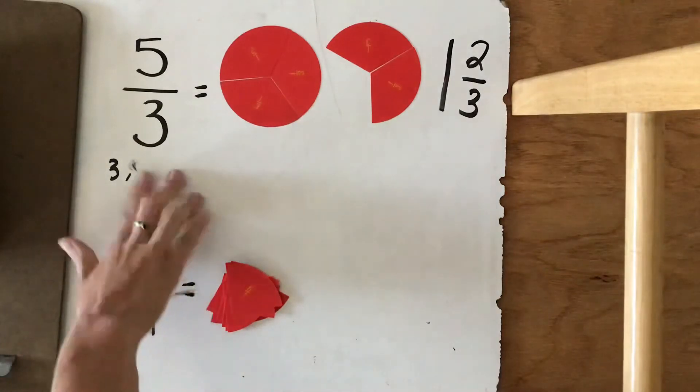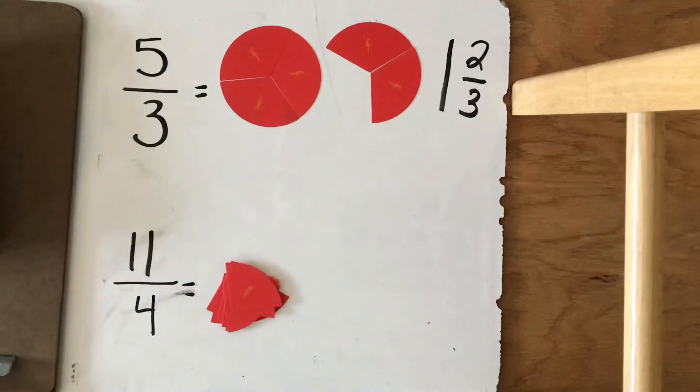Let's try it with 11 fourths. Let's try it without the material first. Let's see if we can get the correct answer. So 4 can go into 11 how many times? If we're not sure, let's skip count.